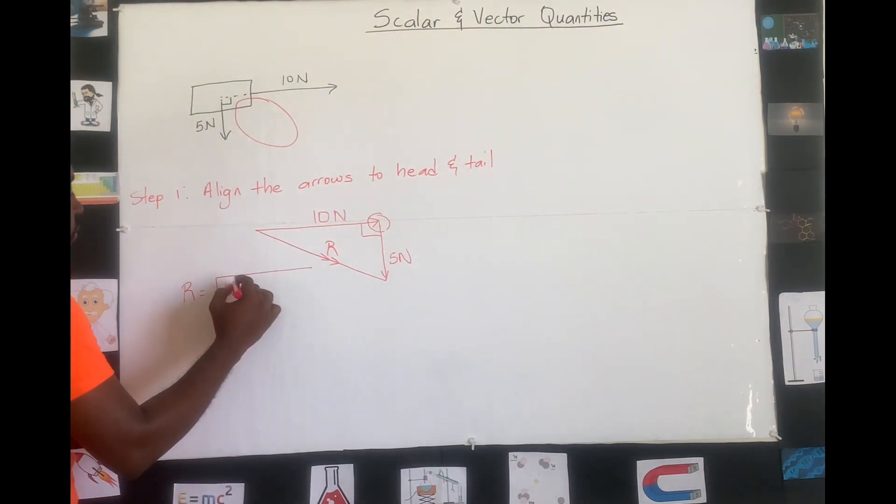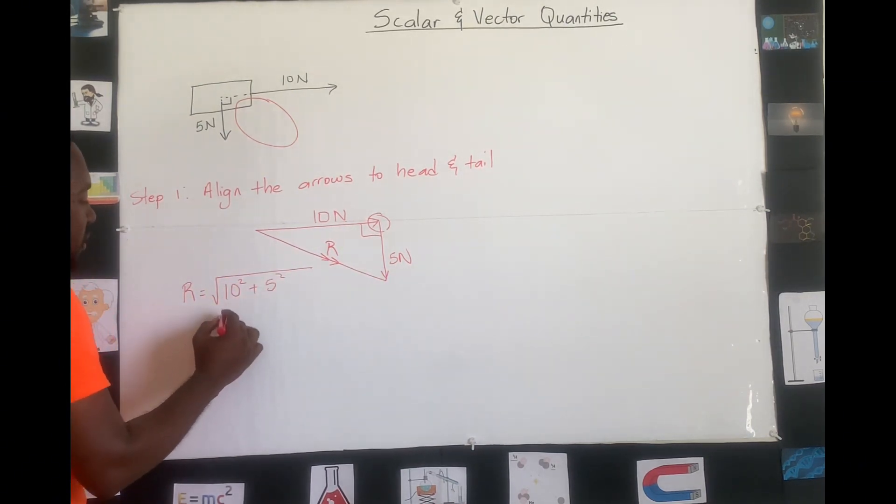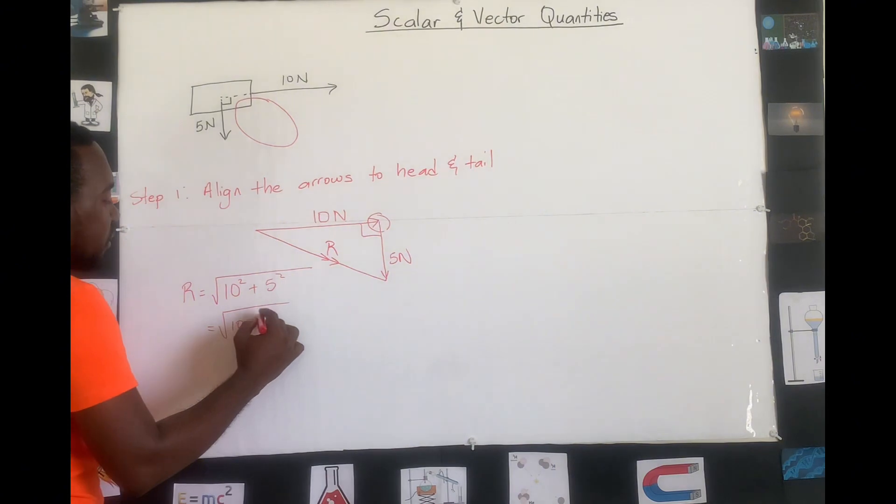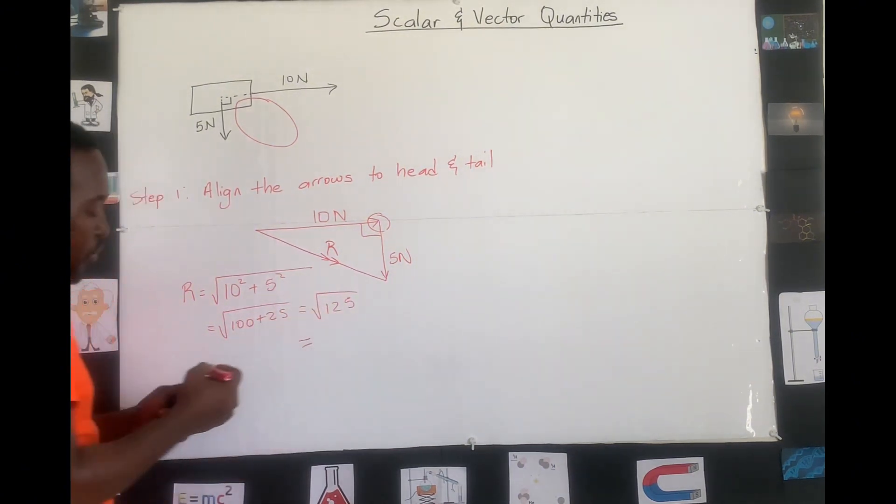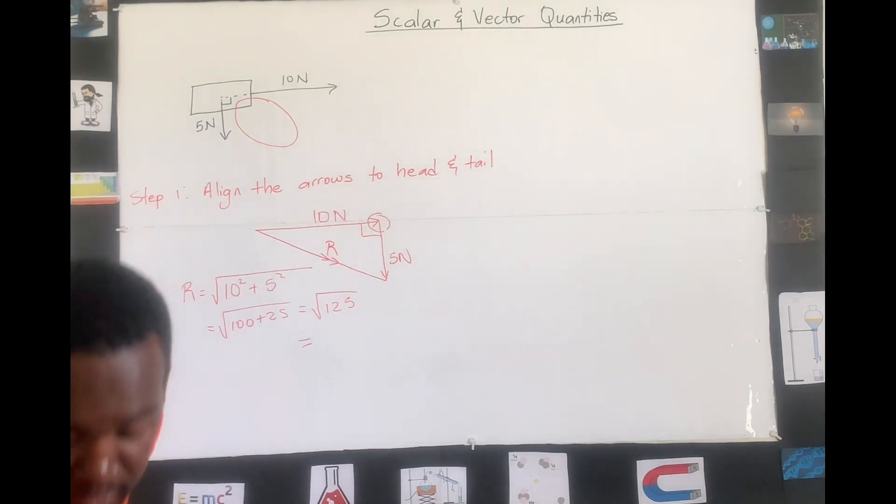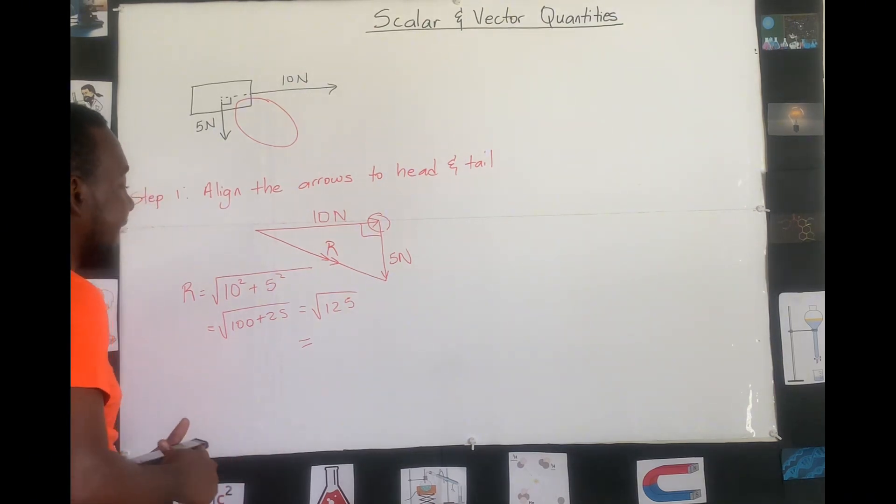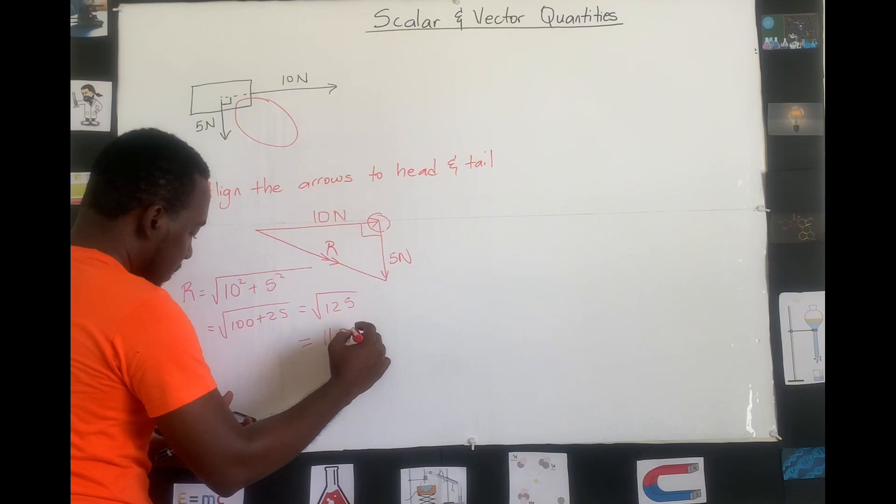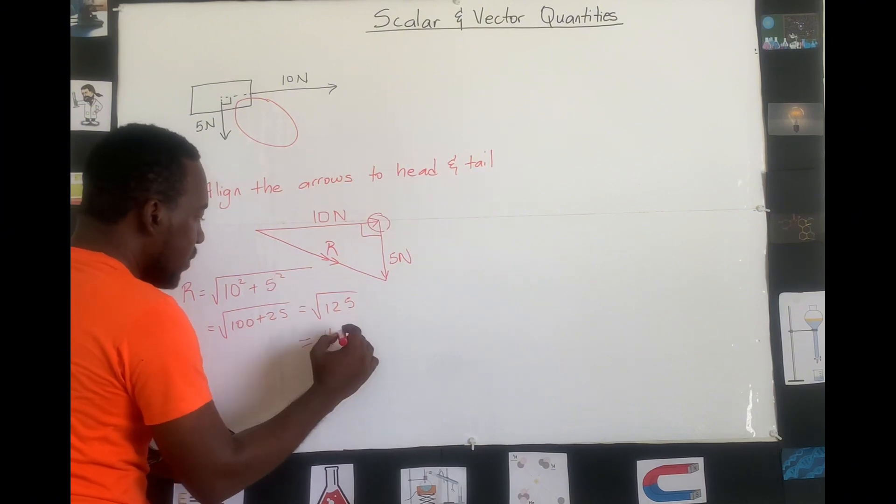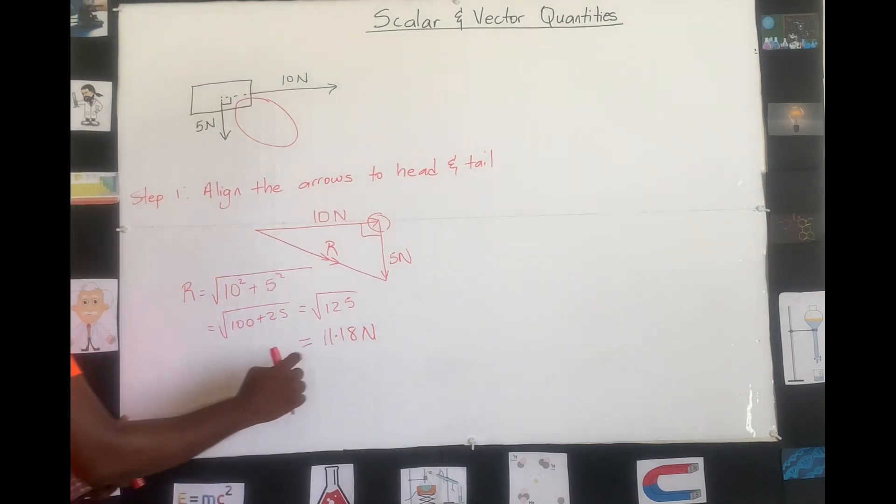It is the square root of 10 squared plus 5 squared, which is the square root of 100 plus 25 is the square root of 125. And if we put that in your calculator, square root of 125 would be 11.18. Now we notice that your resultant force acting on this object here is 11.18.